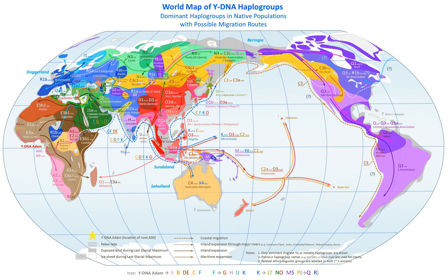As a haplogroup consists of similar haplotypes, it is usually possible to predict a haplogroup from haplotypes. Haplogroups pertain to a single line of descent; as such, membership of a haplogroup by any individual relies on a relatively small proportion of the genetic material possessed by that individual. Each haplogroup originates from and remains part of a preceding single haplogroup, and any related group of haplogroups may be precisely modeled as a nested hierarchy.